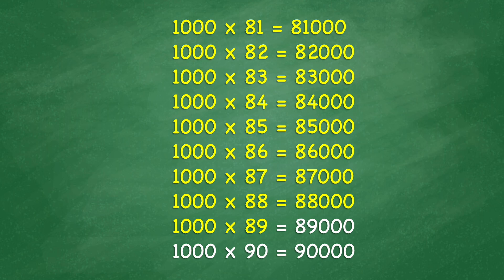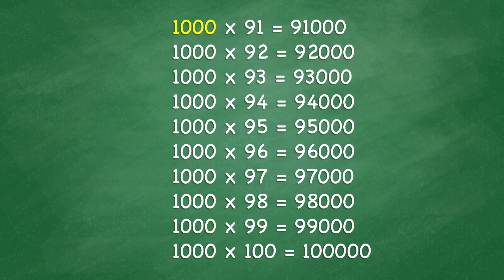1,000 x 89 equals 89,000. 1,000 x 90 equals 90,000. 1,000 x 91 equals 91,000. 1,000 x 92 equals 92,000. 1,000 x 93 equals 93,000. 1,000 x 94 equals 94,000. 1,000 x 95 equals 95,000. 1,000 x 96 equals 96,000.